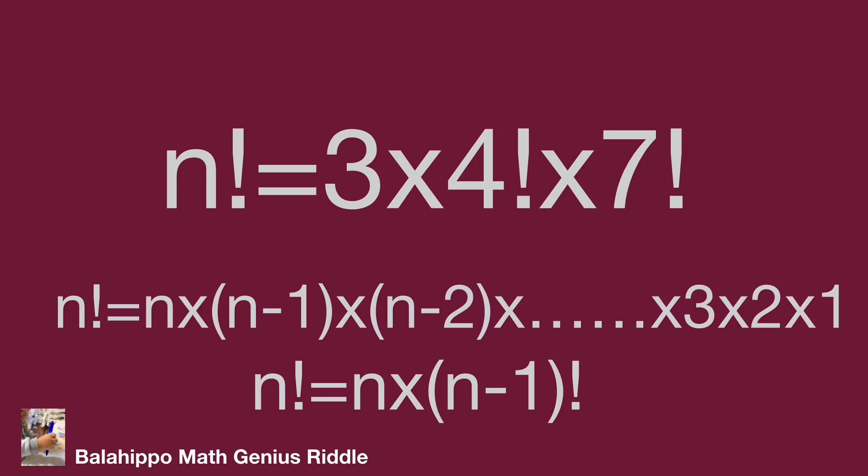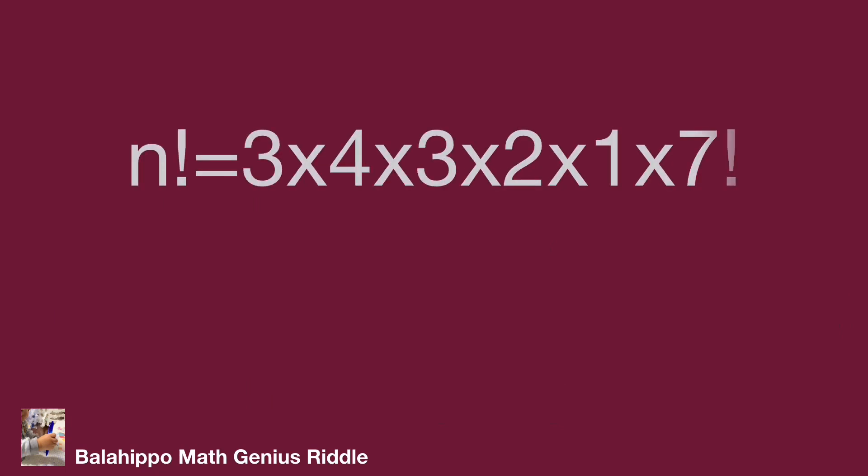Let's work back to the 4 factorial in this equation. 4 factorial equals 4 times 3 times 2 times 1. So the equation is n factorial equals 3 times 4 times 3 times 2 times 1 times 7 factorial.